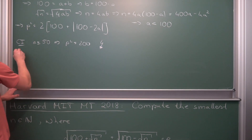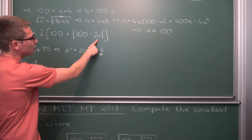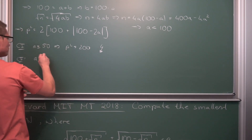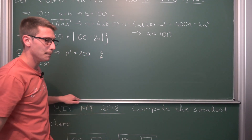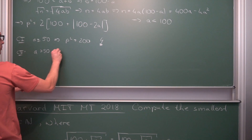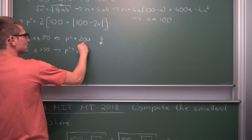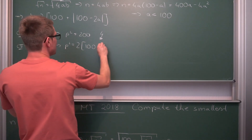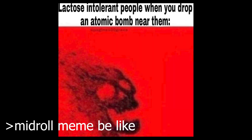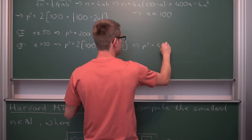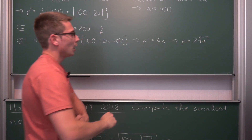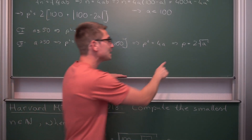Case 2: a > 50. For example, if a = 55 then 100 − 110 = −10, and |−10| = 10. We flip the order to remove the absolute value, getting p² = 2·100 + (2a − 100). The 100s cancel, leaving p² = 4a.